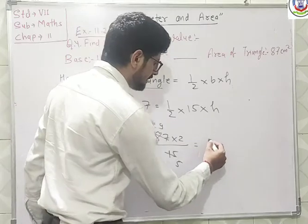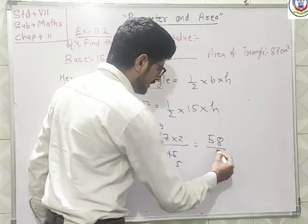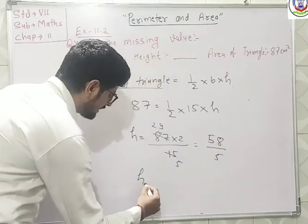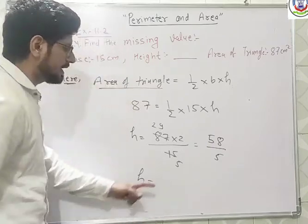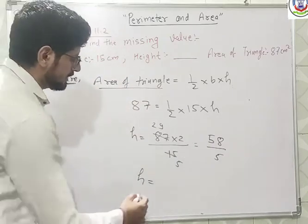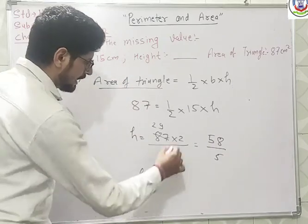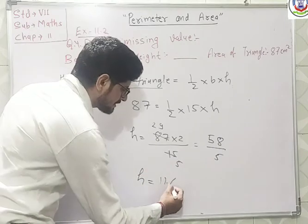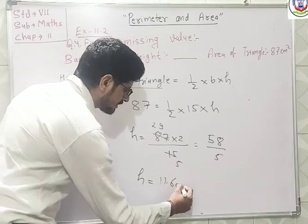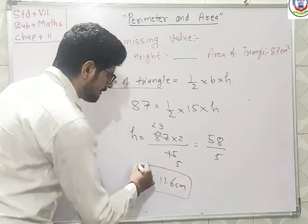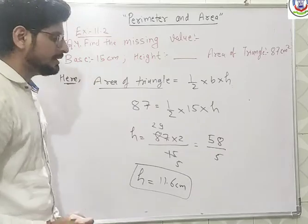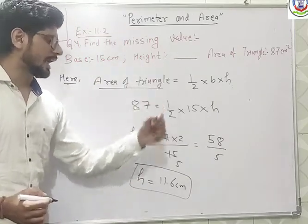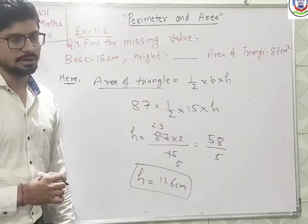We have 29 multiplied by 2, that is 58, and divide by 5. So our h is equal to 58 divided by 5, which gives 11.6 cm. So the height of the triangle is 11.6 cm.